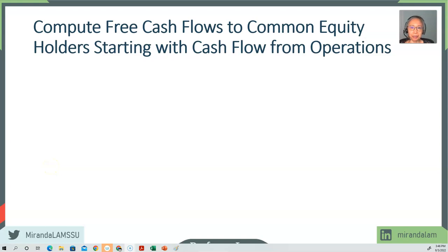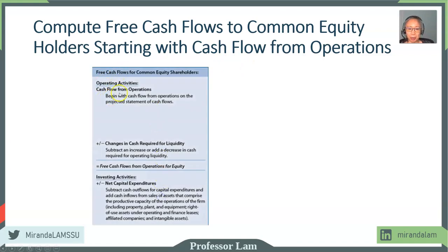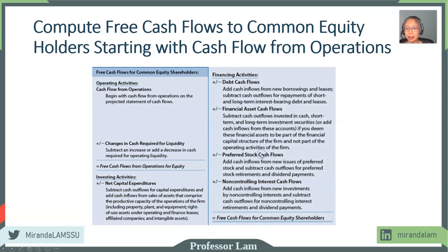Next, let's take a look at how we compute free cash flows to common equity holders. Once again, we start with cash flow from operations. We don't have to add back any interest because this is just to common equity — we do want interest to be excluded. But we will take into account changes in cash balances required for liquidity. Investing activity is the same. Financing activity is different: we have to take into account changes in the overall borrowing level, cash flows associated with financial assets, cash flows associated with preferred stock, and cash flows for non-controlling interest.